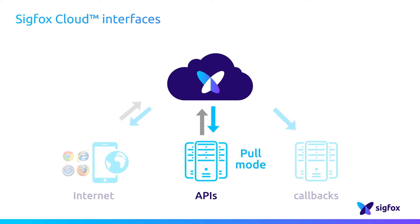Why not? Because a pulling mechanism has to be implemented between the external IT platform and the Sigfox Cloud. This server would continuously need to ask, "are there any new messages for me?" to the Sigfox Cloud. That's very costly for both the Sigfox Cloud and partner platforms.